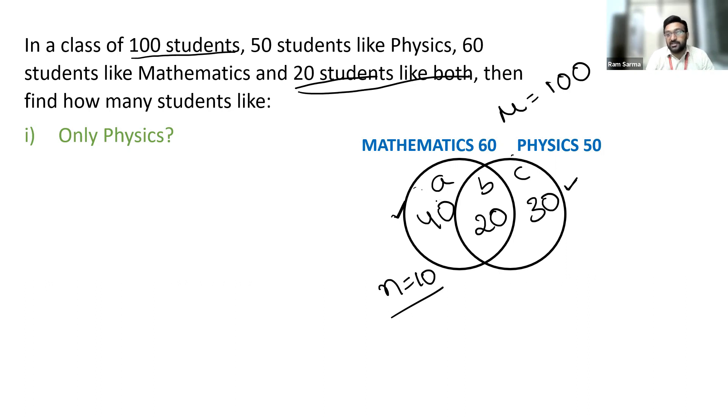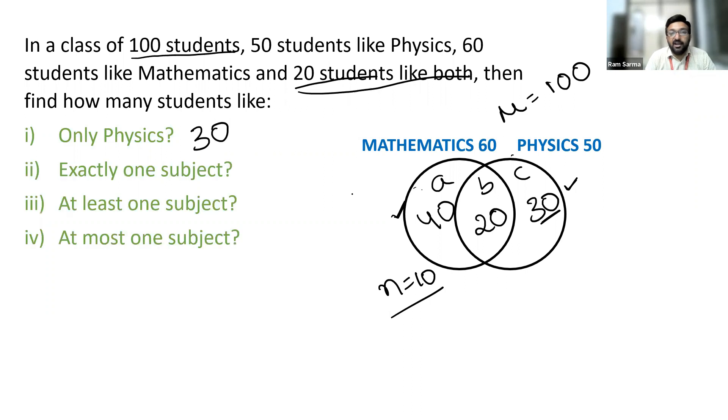Now, let's answer questions based on this. Only physics. So how many students like only physics? That's 30. Let us look at the next one.